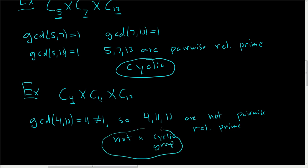Now you see two examples on the screen. In the example with 5, 7, and 13, they were pairwise relatively prime because if you take the GCD of any two different numbers in that list, you get 1 — that's what pairwise relatively prime means. You don't want to take the GCD of 5 and 5; that's just 5. In the other case, these numbers are not pairwise relatively prime because the GCD of 4 and 12 is 4, not 1.